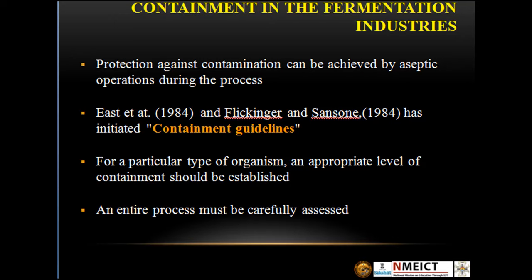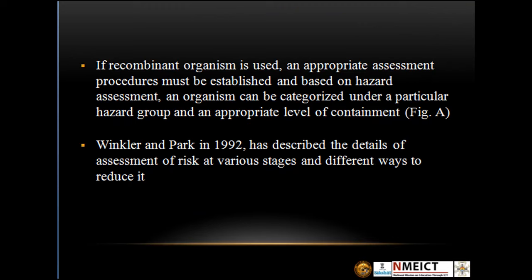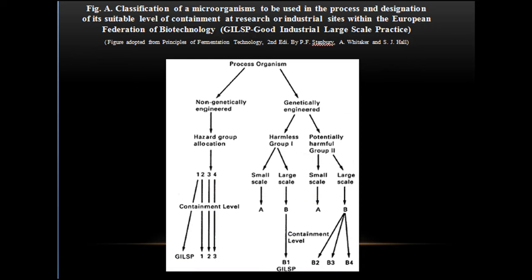Protection against contamination can be achieved by aseptic operation during the process. East et al. in 1984 and Flicklinger and Sanson in 1984 initiated Containment Guidelines. For a particular type of organism, an appropriate level of containment should be established and the entire process must be carefully assessed. If a recombinant organism is used, an appropriate assessment procedure must be established, and based on hazard assessment, an organism can be categorized under a particular hazard group with an appropriate level of containment, as shown in figure A.